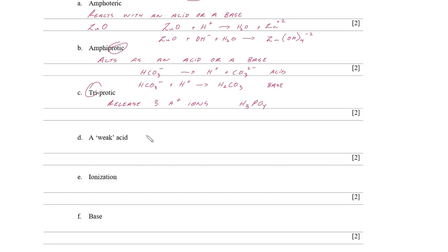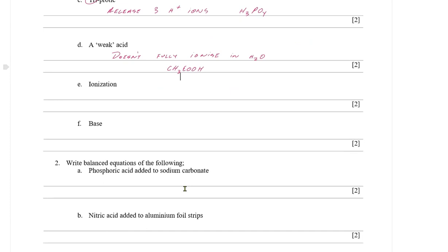A weak acid is an acid that doesn't fully ionize. If I put in one mole of an acid, I'm not going to get one mole of hydrogen ions — it might be only 0.1, meaning only 10% of it ionizes. It doesn't fully ionize in water, which is the solvent, and anything organic is usually a weak acid.